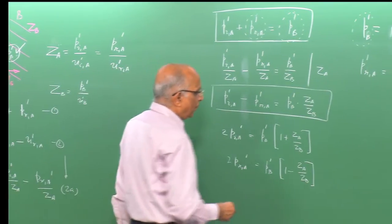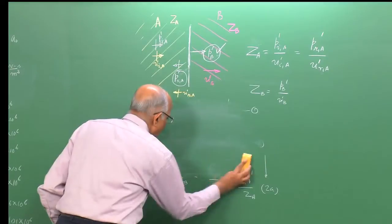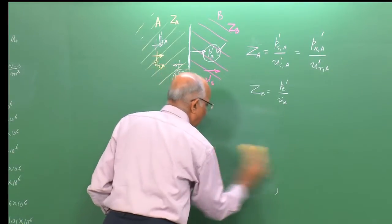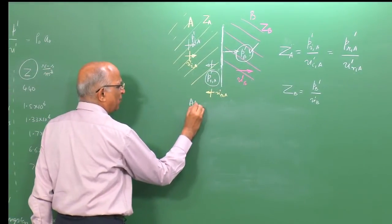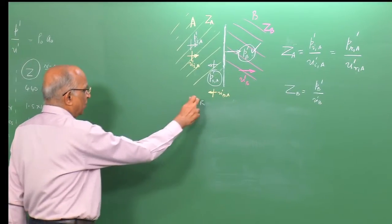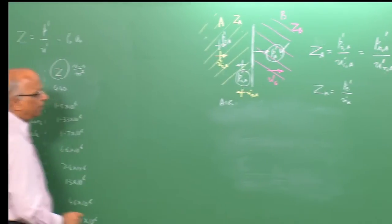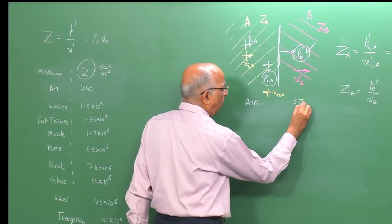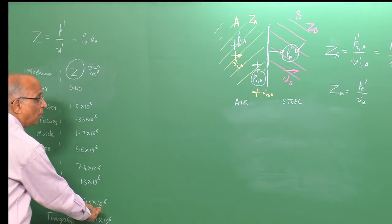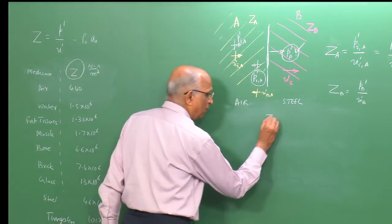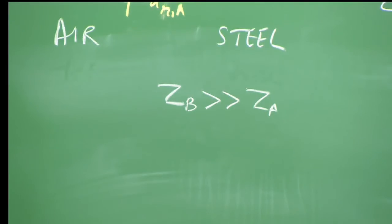Consider medium A as air with Z_a ≈ 440 N·s/m³, and medium B as steel with Z_b on the order of 4 × 10⁷ N·s/m³. In this case Z_b is very much greater than Z_a.